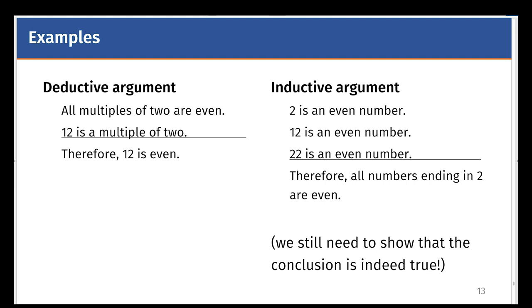In an inductive argument, the idea of an even number is based on examples. We know that two is an even number, twelve is an even number, twenty-two is also an even number. So inductively, you can say that all numbers ending in two are even, although we still need to show if this conclusion is indeed true. And it is indeed true. All numbers ending in two are multiples of two, therefore they are even.